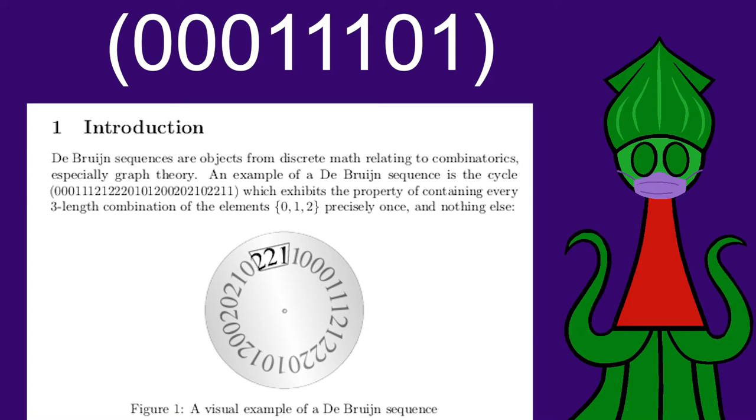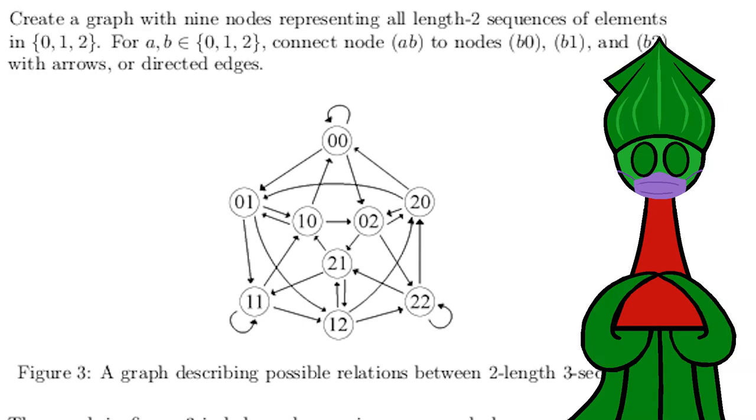If I told you I could make a Debron sequence for every possible natural numbers k and n, would you believe me? Because here's a quick proof. Given k and n, let's just say three and three, let's make a graph out of vertexes and directional edges.